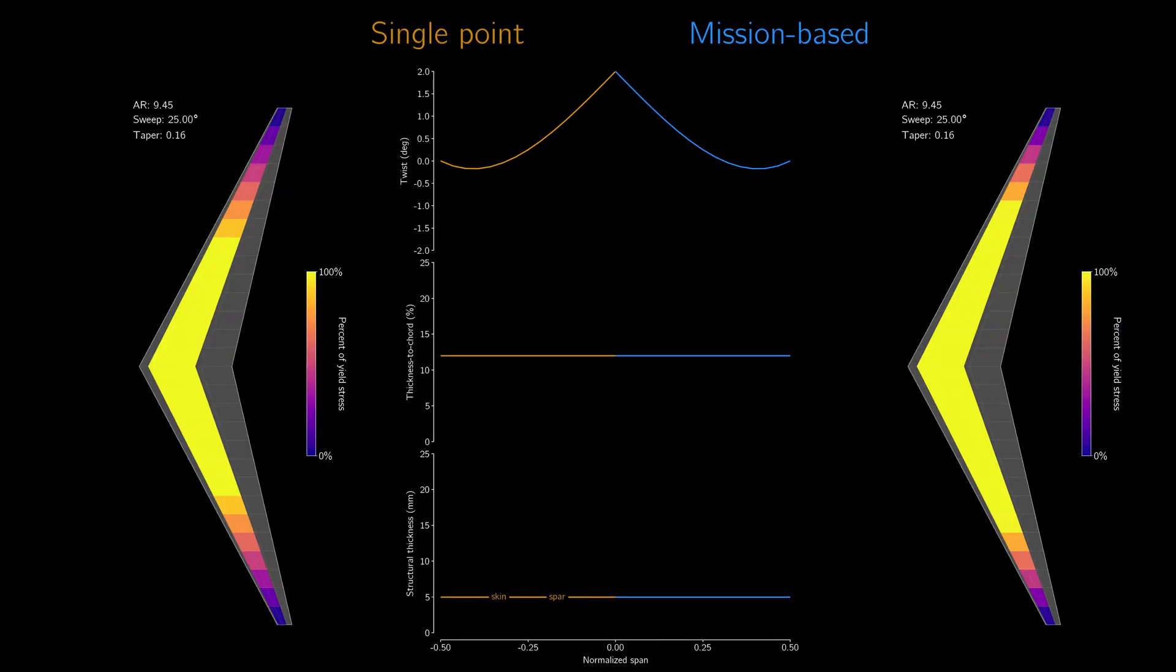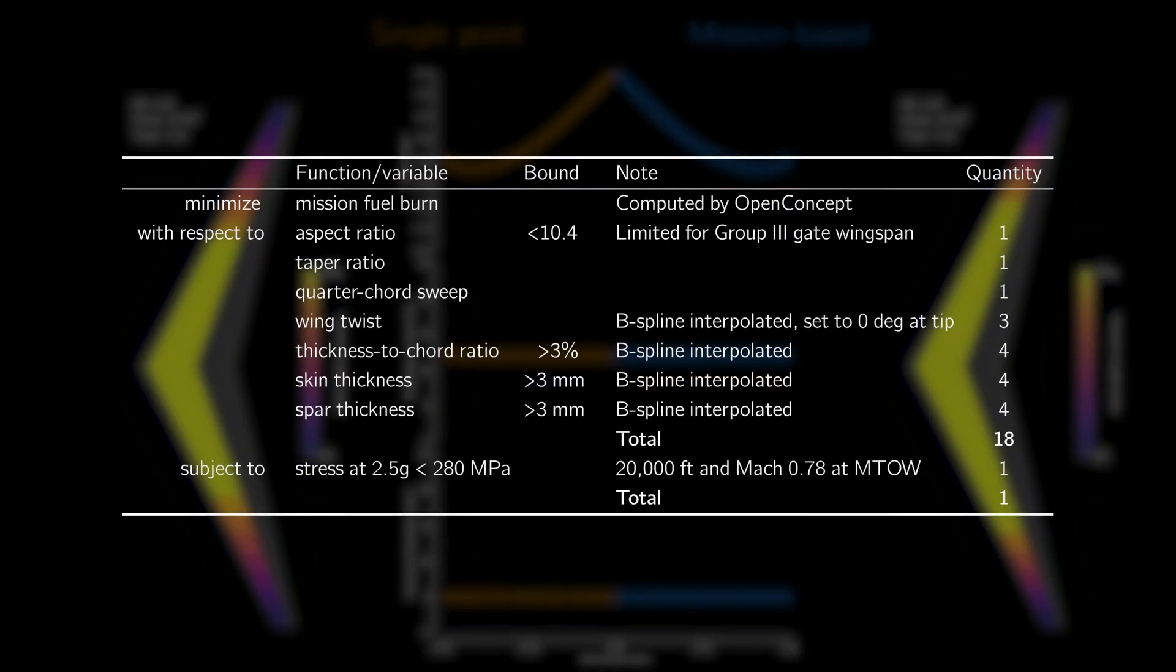We now have all the tools we need to do aerostructural optimization with an accurate, numerically integrated fuel burn model in the loop. We call this mission-based optimization. The goal of the optimization is to minimize fuel burn by varying the wing's planform shape, twist, thickness to chord, and structural sizing. A 2.5G maneuver condition constrains the structural stresses.